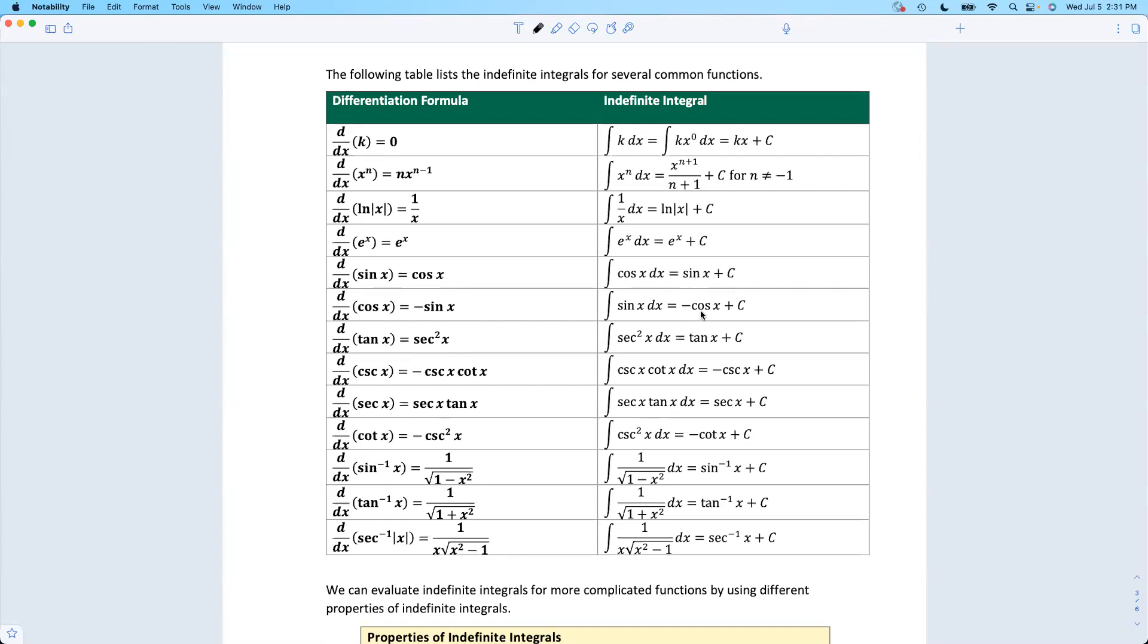Or, I guess another way to remember this is taking the derivative, sine gives you positive cosine. Taking the antiderivative, it's the other way around. Antiderivative of positive sine is negative cosine.